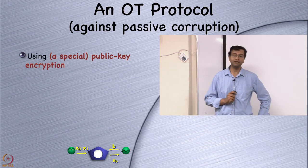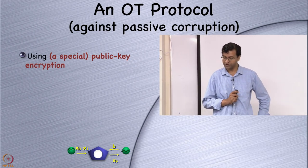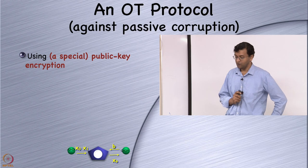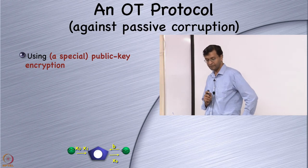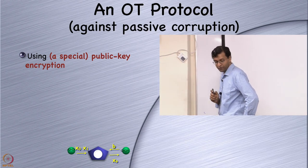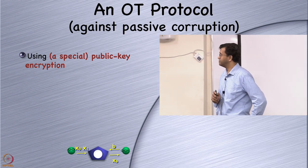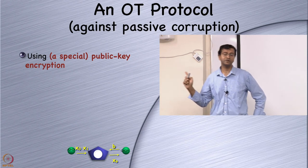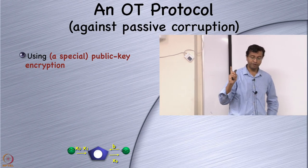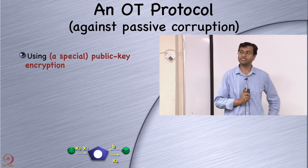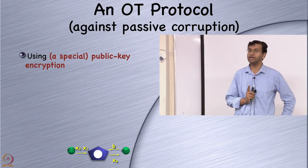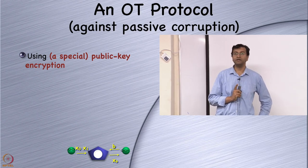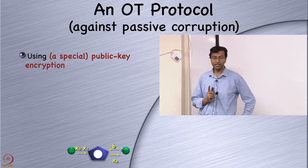Here is the protocol that's secure against passive corruption for OT — oblivious transfer. We need a public key encryption scheme with a little extra property, which I'll explain in a moment.